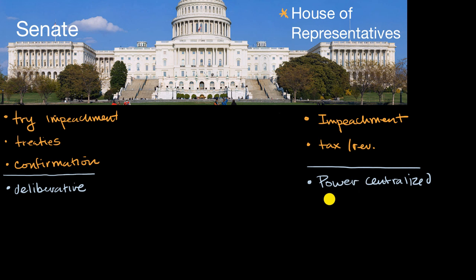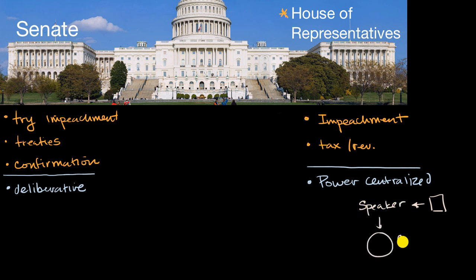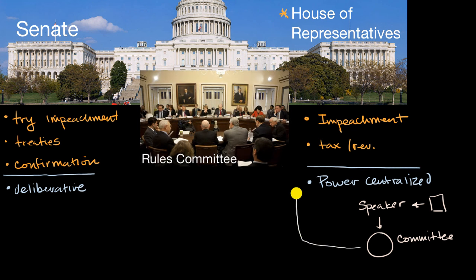To appreciate this centralized power and the more efficient versus deliberative process in the House of Representatives, you have to remember that if a bill comes to the House, it will first go to the Speaker, who decides which committee it goes to. The committee can conduct hearings, have some debate, and the leadership of the committee can decide to bring it to the House floor. But in reality, the rules committee gets involved, and in the House it has a significant amount of power.